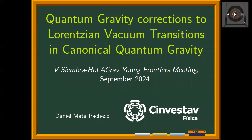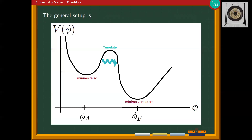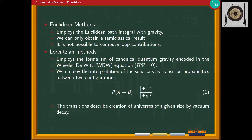Let me talk about what we mean by vacuum transitions. We have a canonically coupled scalar field to general relativity with a scalar field potential that has two minima. One minimum has greater energy, which is the false minimum, and the global minimum has the lowest energy, making it the true minimum. Quantum mechanically, we expect transitions by tunneling from the false minimum to the true one.